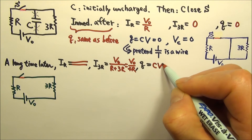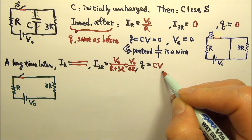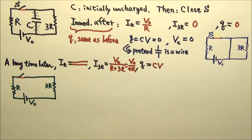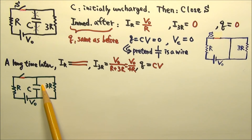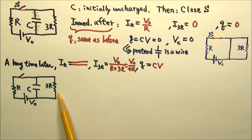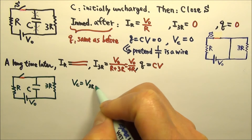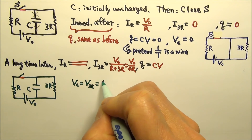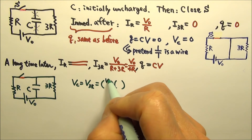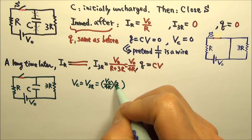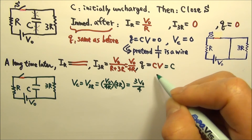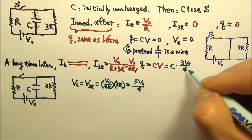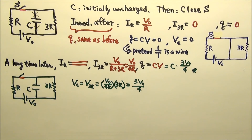As for Q, it equals CV, so we have to find the voltage across the capacitor. Although we cut the wires conceptually, the capacitor is still connected. To find the voltage across the capacitor, we can find the voltage across 3R because they are in parallel and have the same voltage. V = IR gives us (V₀/4R) × 3R = 3V₀/4. So the voltage across the capacitor is 3V₀/4, and that gives us the charge on the capacitor: Q = 3CV₀/4.